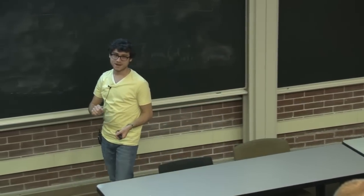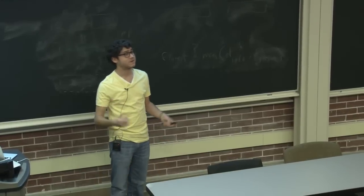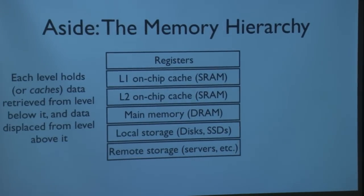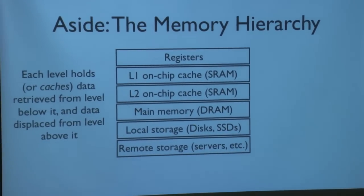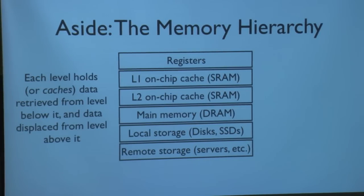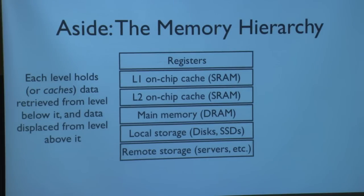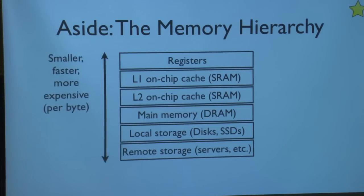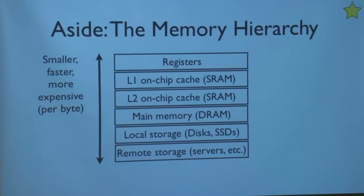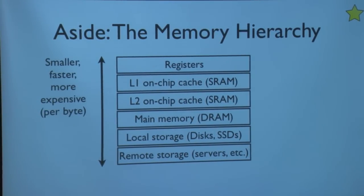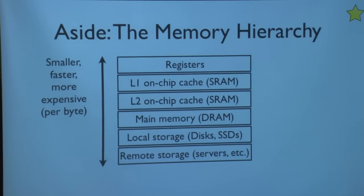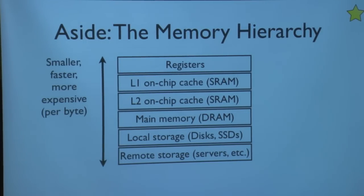Each level stores or caches data retrieved from the level below it, and holds data displaced or evicted from the level above it. In general — and this is a really important trade-off — the smaller, faster devices tend to be more expensive and we have only a small amount of them. As we go to larger, higher-capacity devices, they tend to be slower but also cheaper. This is a trade-off we need to work with.